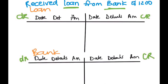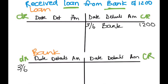In the loan account, our liabilities increased — on the 3rd of June we received a loan through the bank of $1,200, so we credit it. In the bank account, money was deposited into our bank for a loan of $1,200, so we debit it. Our debit here is equal to our credit.